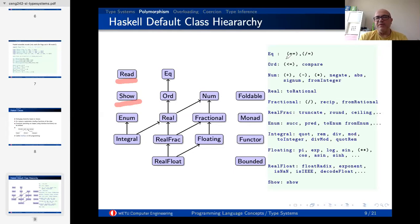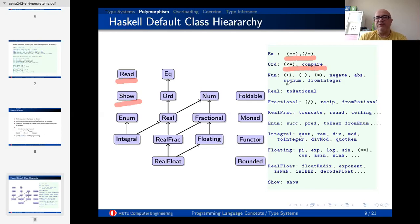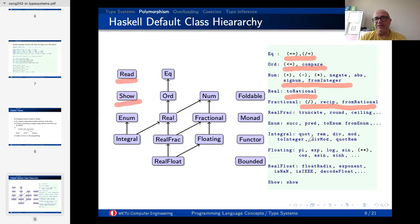Each class has a couple of interfaces to implement. For Eq you need to implement equals and not-equals — if you implement equals, not-equals can be its negation. For Ord you implement ordering interfaces. For Num you implement seven functions. For Fractional you implement division and fromRational. For Integral you have integer division and modular operations. For Floating you have trigonometric functions and variations. Show simply takes your data type and converts it to a string. Now let us do an exercise on that.